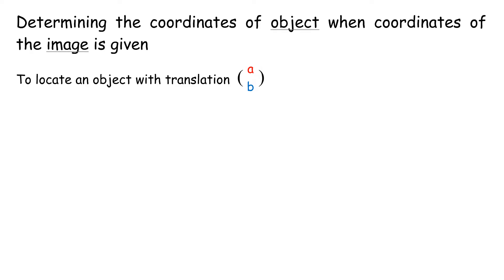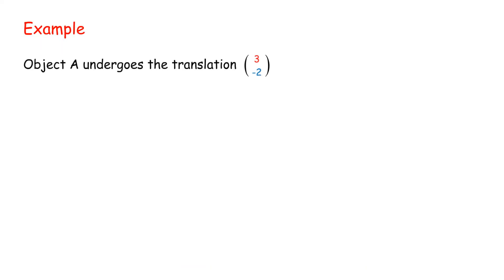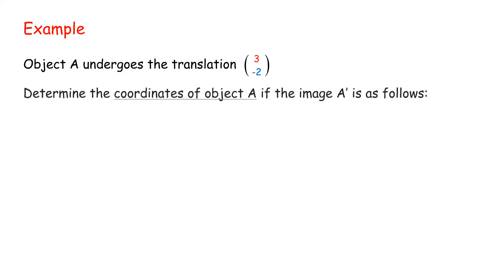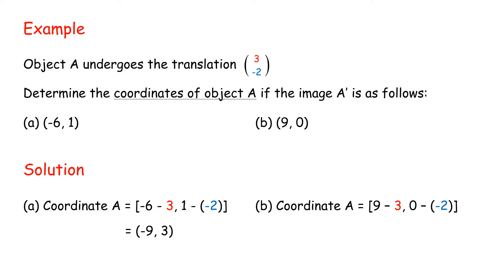Determining the coordinates of the object when coordinates of the image are given. To locate an object with translation (A, B), coordinates of image R'(x', y') will be mapped to object R(x' - A, y' - B). Example: Object A undergoes a translation. Determine the coordinates of object A if the image A' is as follows. Solution: A. Coordinate A = (-6 - 3, 1 - (-2)) = (-9, 3). B. Coordinate A = (9 - 3, 0 - (-2)) = (6, 2).